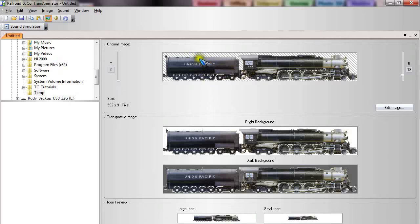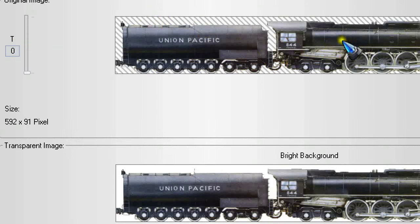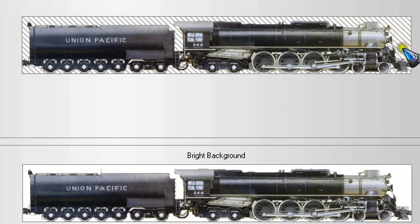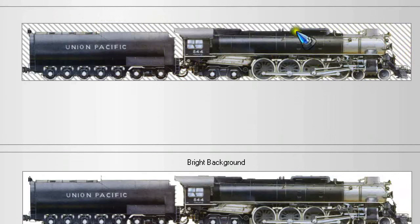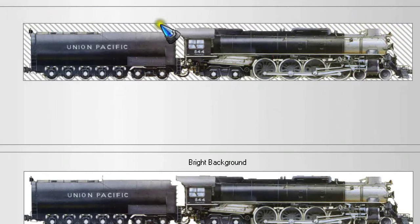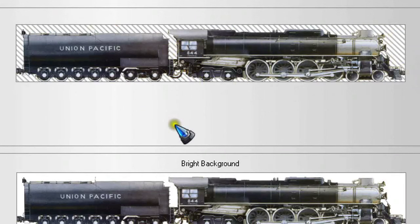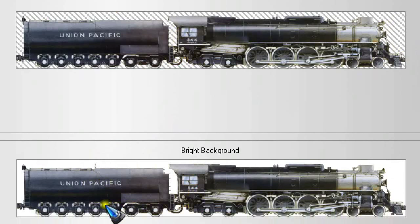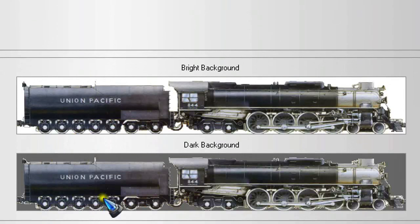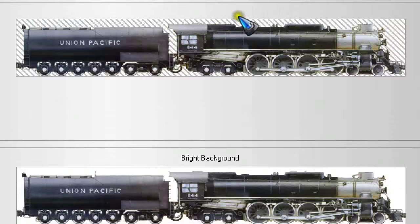What this program does is two things. As we see with the default engine it opens with, the surroundings of the engine are shown with diagonal stripes, meaning they are transparent in the image. In TrainController, with a white background it will look clean, and with a colored background it will also look clean. This is what we can do with the program — get transparency outside the engine pixels — and then transfer it to the special file format.